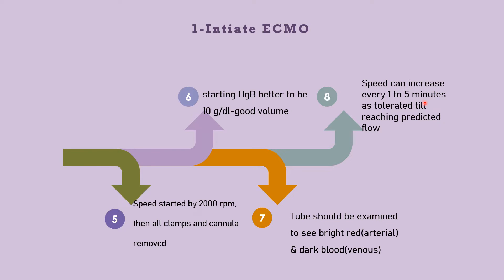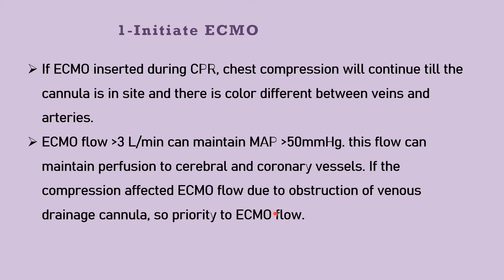Speed can be increased every one to five minutes as tolerated until we reach the predicted flow rate. If ECMO is inserted during CPR, chest compressions will continue until the cannula is inside and there is color difference between vein and artery. A key hint: ECMO flow more than three liters per minute can maintain mean arterial blood pressure more than 50 mmHg, sufficient to maintain perfusion to cerebral and coronary vessels. If compressions affect flow due to obstruction of the venous cannula, priority will go to ECMO flow.